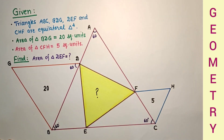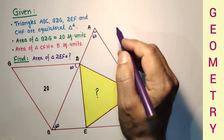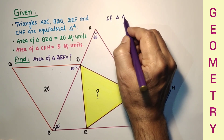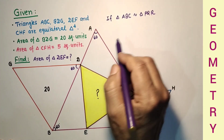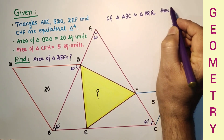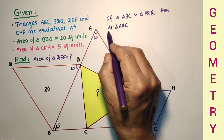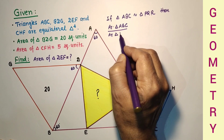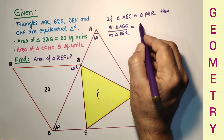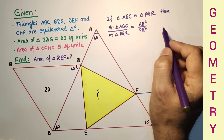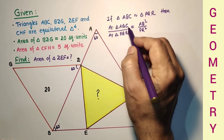For 2 similar triangles, the ratio of their areas will be equal to the ratio of the squares of their corresponding sides. It means if triangle ABC is similar to triangle PQR, then area of triangle ABC upon area of triangle PQR is equal to AB² / PQ² or BC² / QR² or AC² / PR².